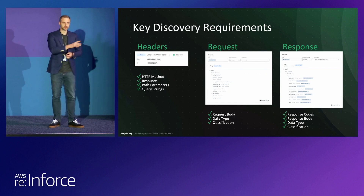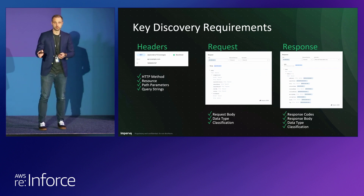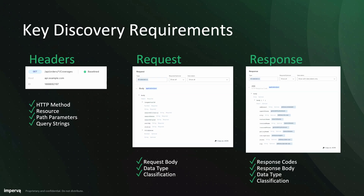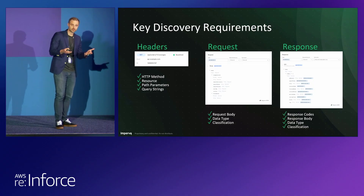When you talk about discovery, there are key requirements you want to meet across the board. For all your APIs, you want headers, HTTP method, resource, path parameters, and query string — that's the baseline to understand the layout. In the request body, you want the data types and classification, which tells you what your consumer API users are sending. The response is one of the most important things — if you're looking to identify instances where sensitive data is going out the door, that's happening in the response. If you're only looking at the request, you're missing a lot of the traffic.